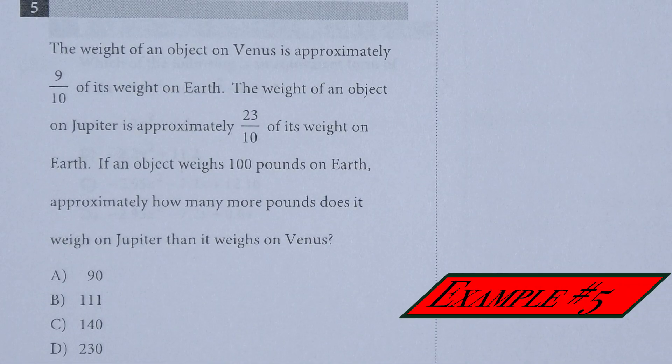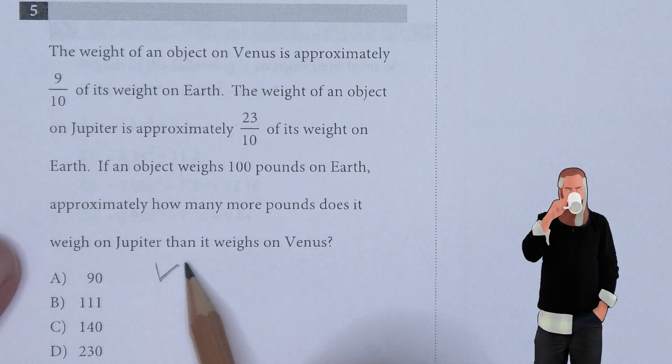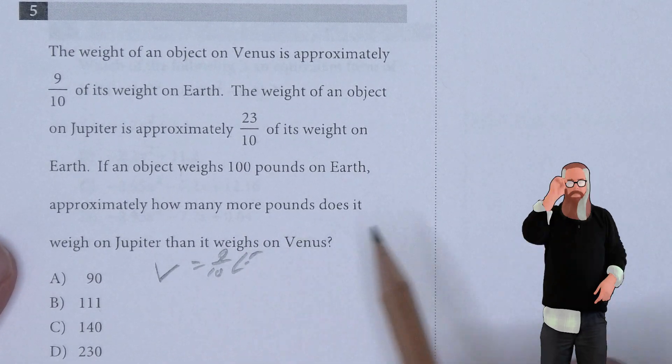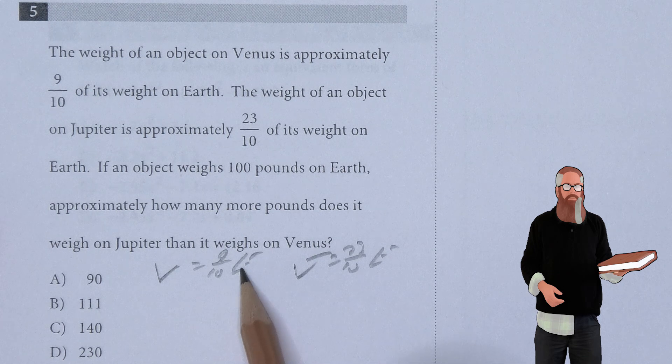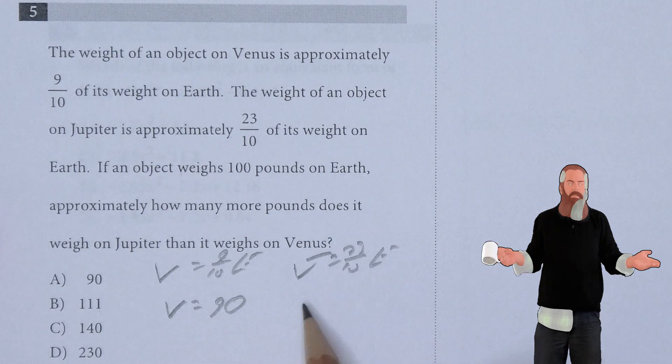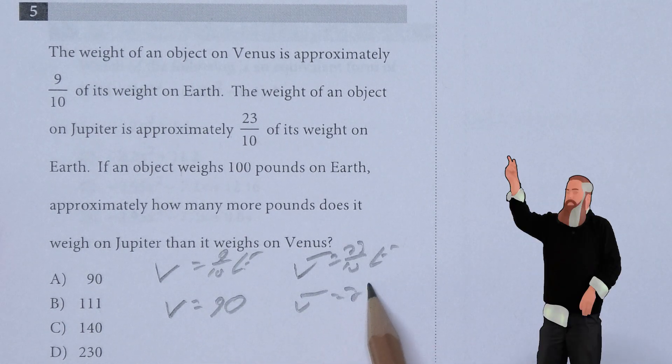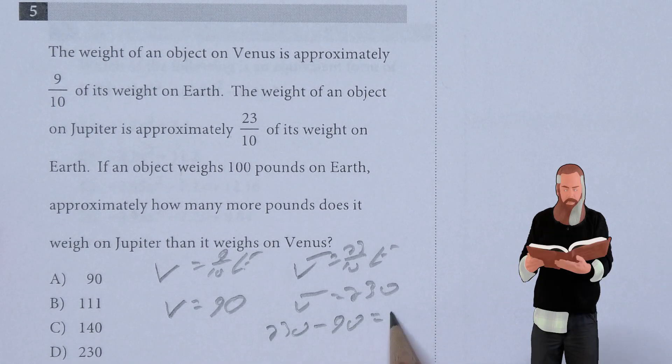The weight of an object on Venus is approximately 9/10 of its weight on Earth. The weight of an object on Jupiter is 23/10 of its weight on Earth. If an object weighs 100 pounds on Earth, approximately how many more pounds does it weigh on Jupiter than on Venus? 100 times 9/10 means on Venus it would weigh 90 pounds. On Jupiter, we would get 230 pounds. So 230 minus 90 gives us 140. C is the answer.